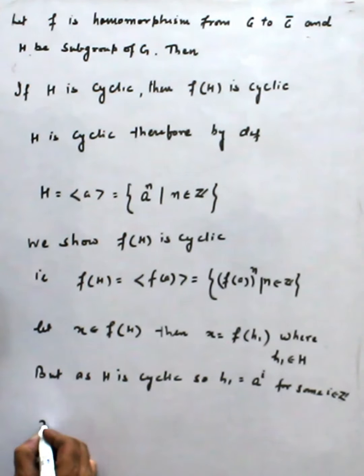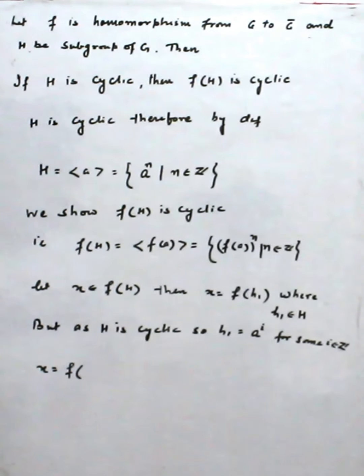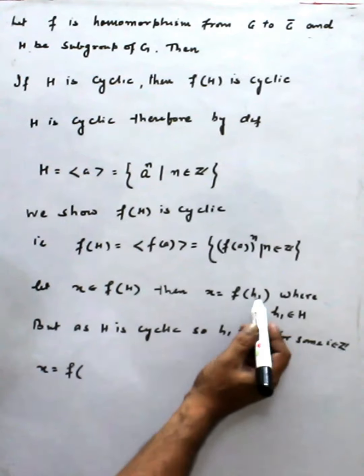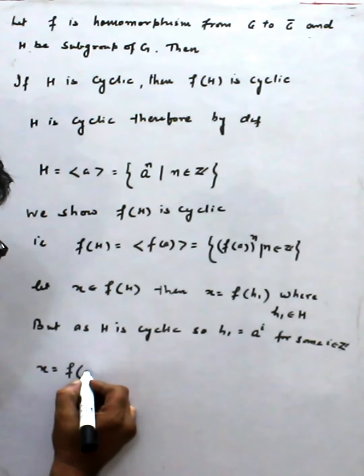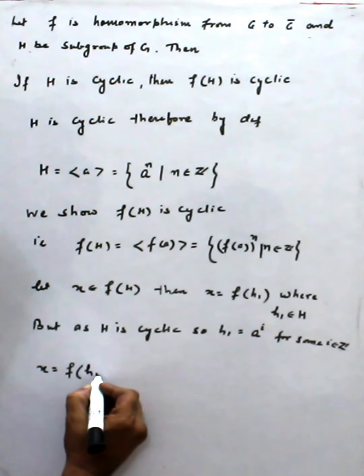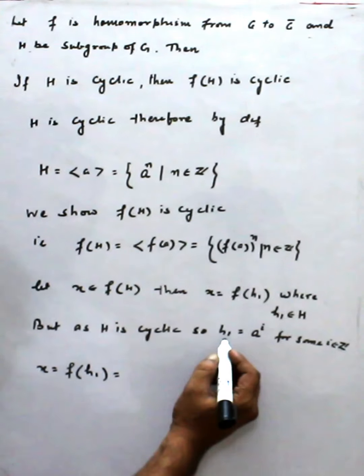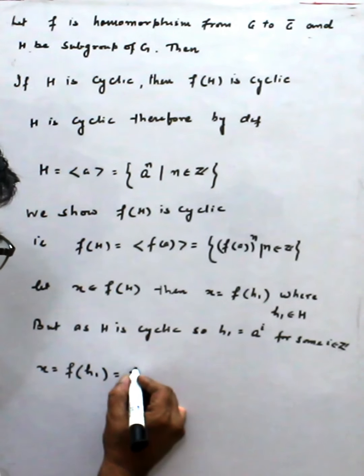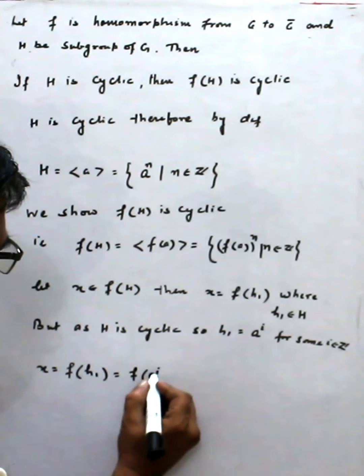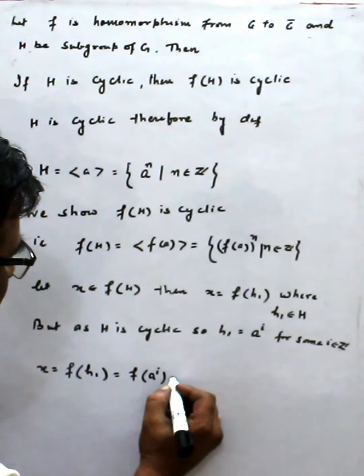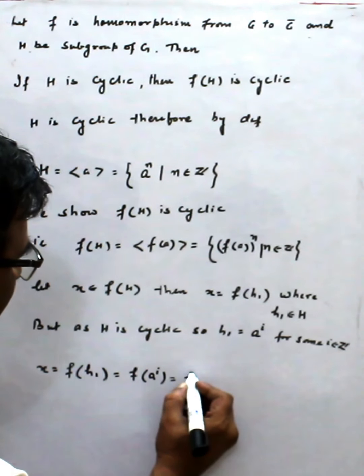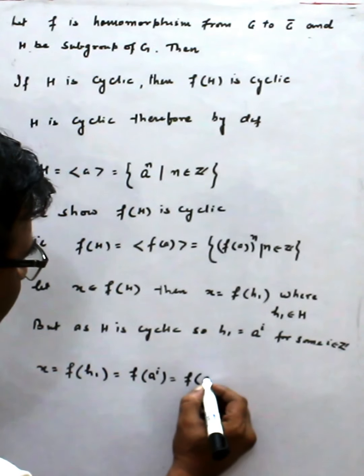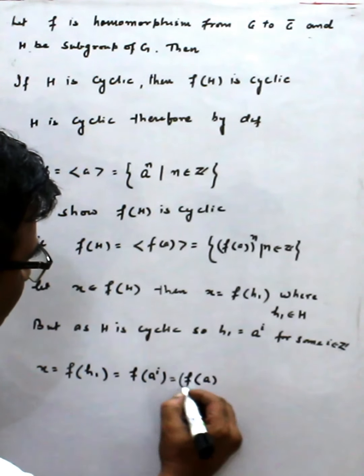That means x is F(h₁). Since x equals h₁ and h₁ is a^i, this becomes a^i. And because F is a homomorphism, we can write F(a) raised to power i.